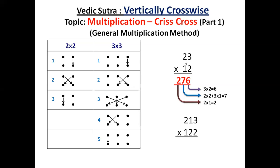3 multiplied by 2 is 6. The first step is this. Second step, 2 into 2 plus 3 into 1. 2 into 2 is 4. 3 into 1 is 3. 4 plus 3 is 7. That is the middle. It is written here. And next step, 2 into 1 is 2.